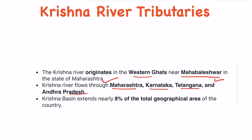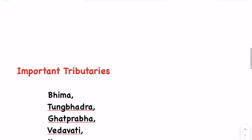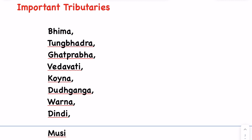The Krishna basin extends nearly 8% of the total geographical area of the country. Some important tributaries are Bhima, Tungabhadra, Ghataprabha, Vedavati, Koyna, Dudganga, Varna, Dindi, and Musi. There are many other tributaries, but these are some important ones.